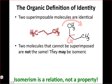Two molecules that cannot be superimposed are not the same. We're going to see many examples of molecules that originally chemists thought were the same, but as more details came to light about organic structure and the nature of molecules in three dimensions, chemists learned that superposition is actually harder to achieve in some cases than we might think. They may be isomeric - but only if they have the same molecular formula, since that is the most general starting point for isomers.